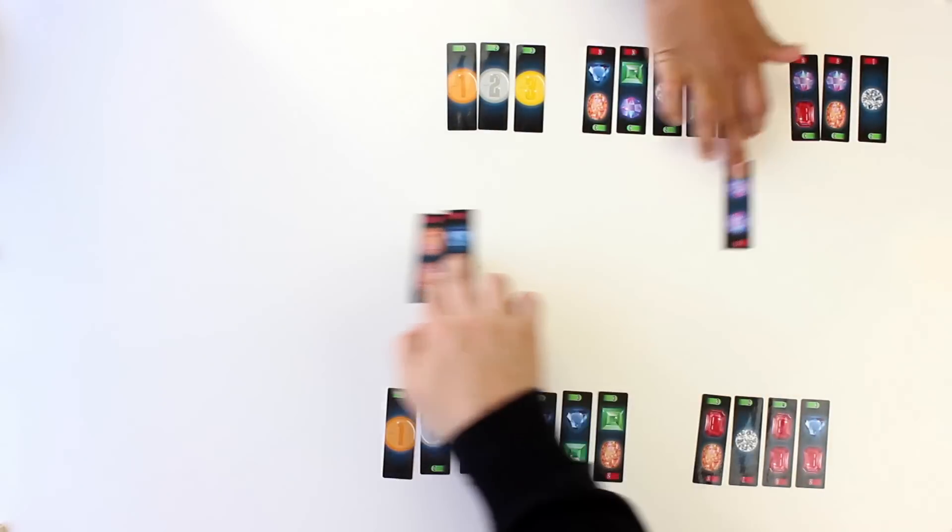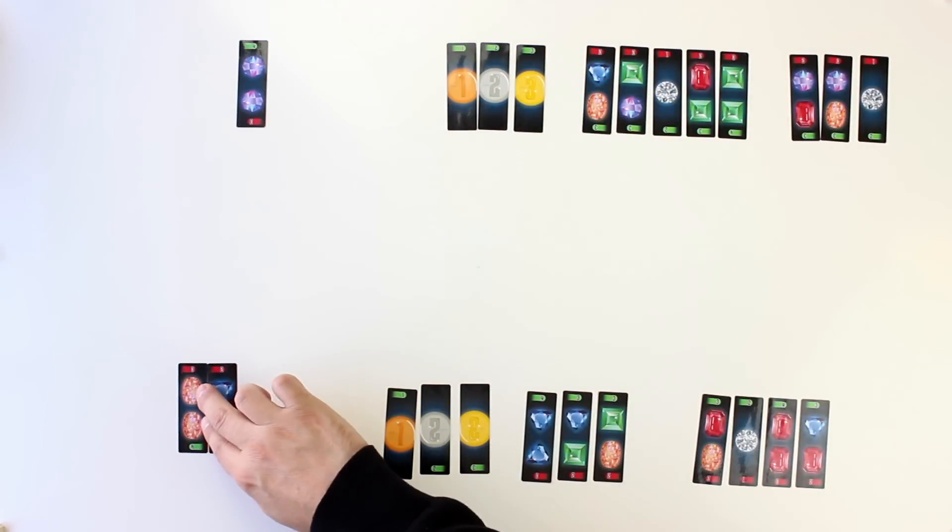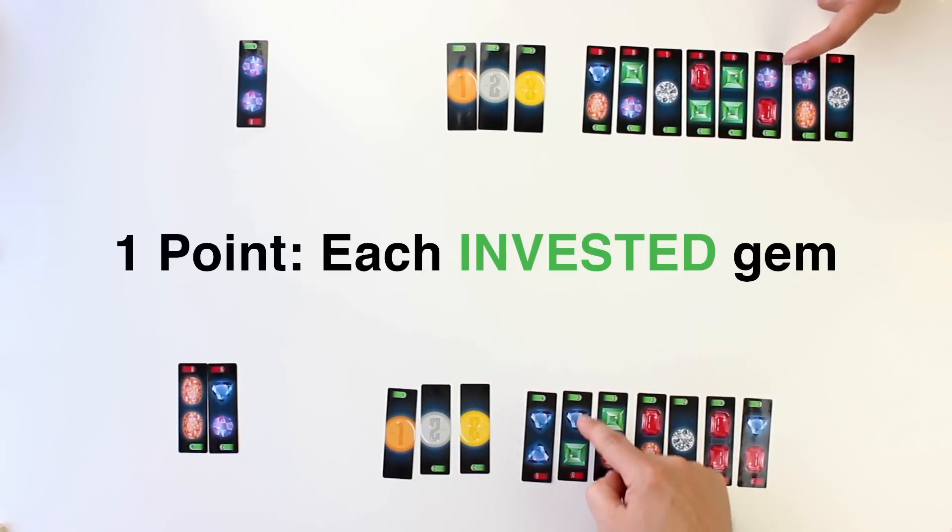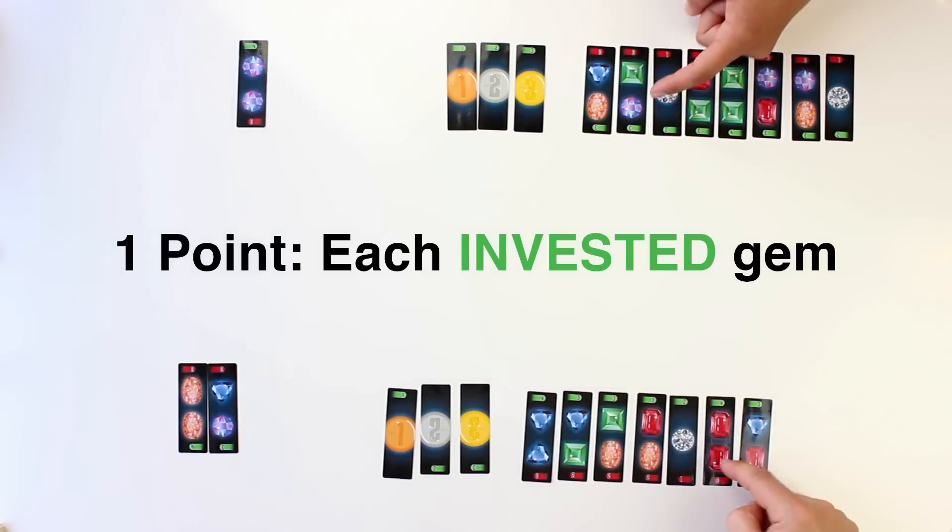At the end of the game, leveraged cards are not included in scoring and are considered out of the game. Each player calculates their score as follows: one point for each gem that is on a card that is green side up.